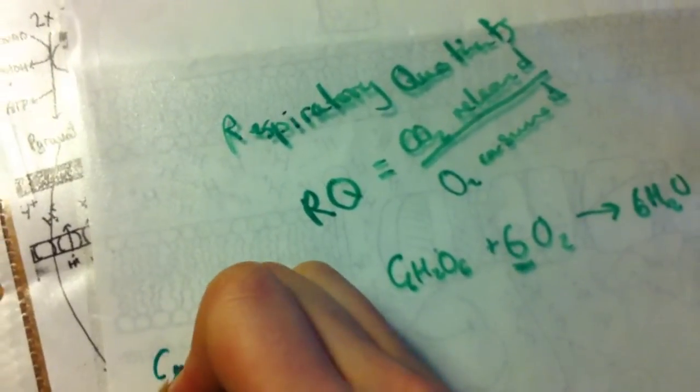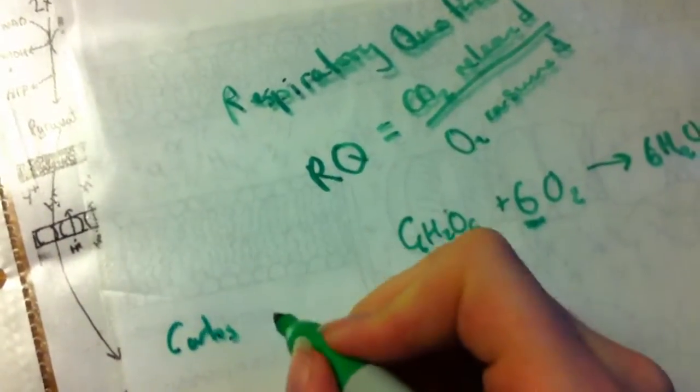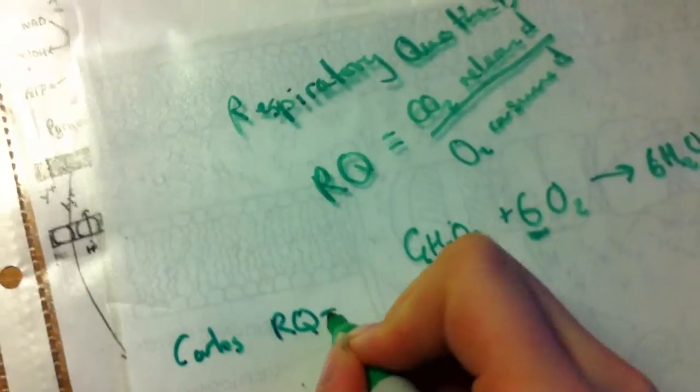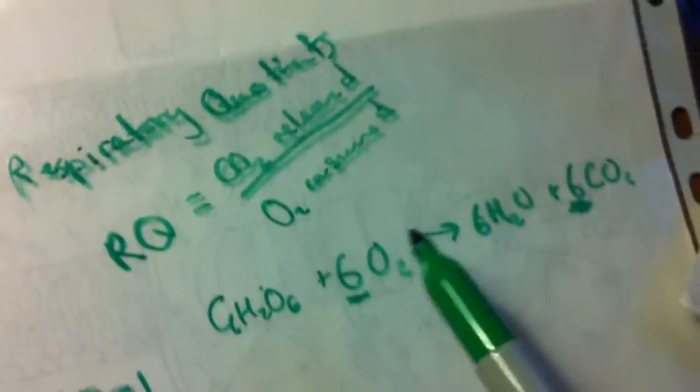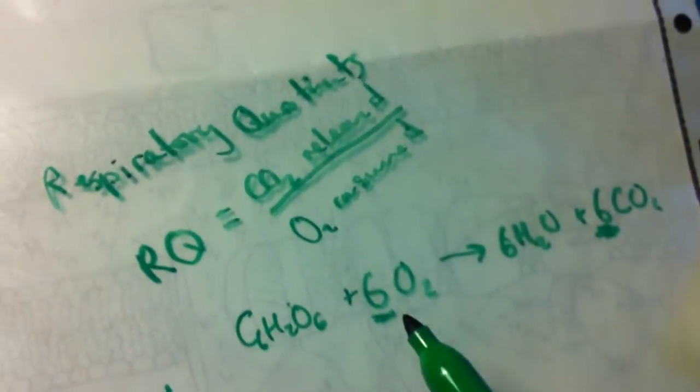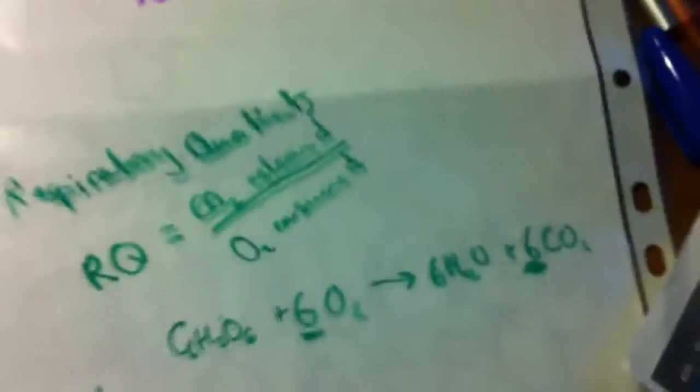So for your carbohydrates, your RQ is equal to 1. So if you look at your glucose or just any of these, you end up with 6CO2 over 6O2, which makes 1.